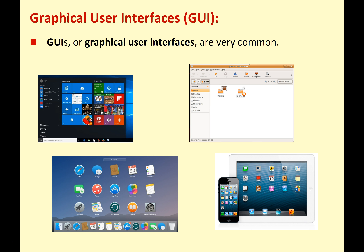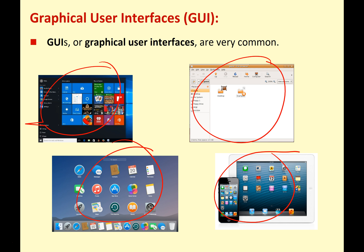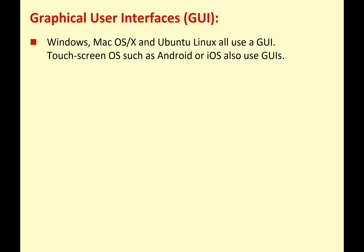Now we're looking at the GUI, the graphical user interface. These are very common — they're the prime way that we use computers, and we have done since the mid-1980s. We've got examples here: we've got Windows, a Mac system, iOS, and a form of Linux — these are all using GUIs. Windows, macOS, Ubuntu all have graphical user interfaces. Android and iOS are also GUIs.